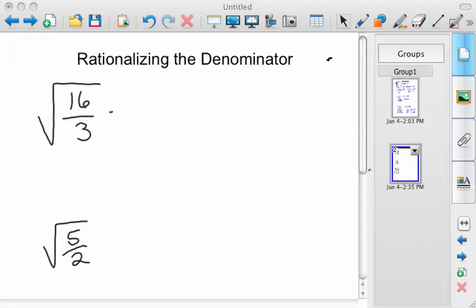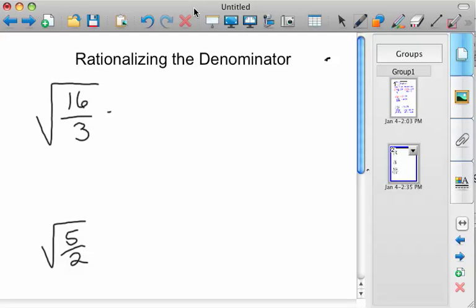All right, rationalize the denominator. When you have a quotient, a radical with a quotient, we want to rationalize the denominator. So what you do in this case is really pretty simple, but first off, you split it up into two radicals.